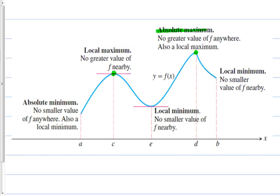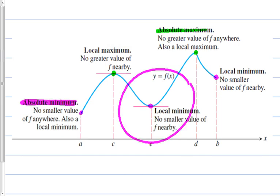For minimums: there are three low points on the graph. Which one is the lowest? Obviously the deepest one is the lowest, so it's called the absolute minimum. The other two are the lowest points in their respective neighborhoods — they're still minimums, but they're only local minimums.